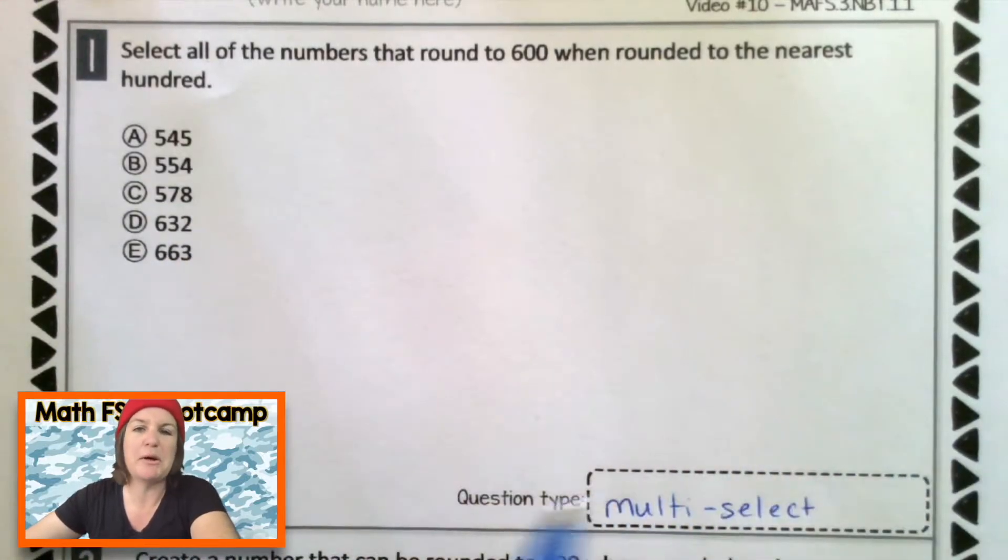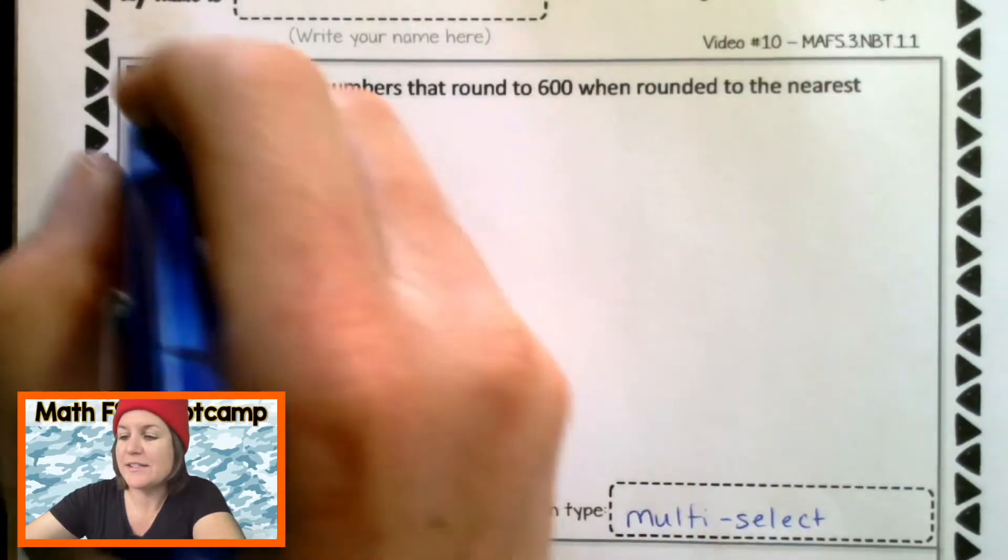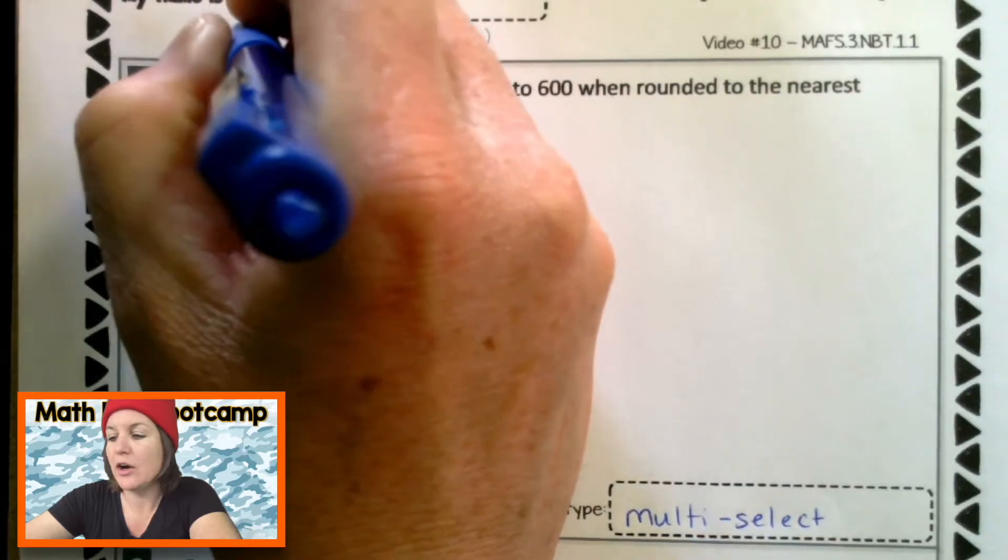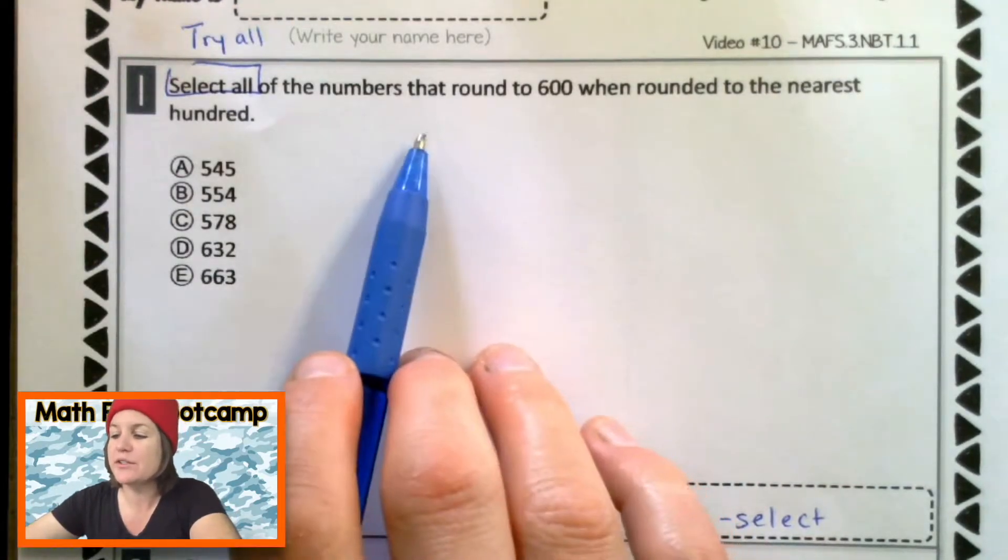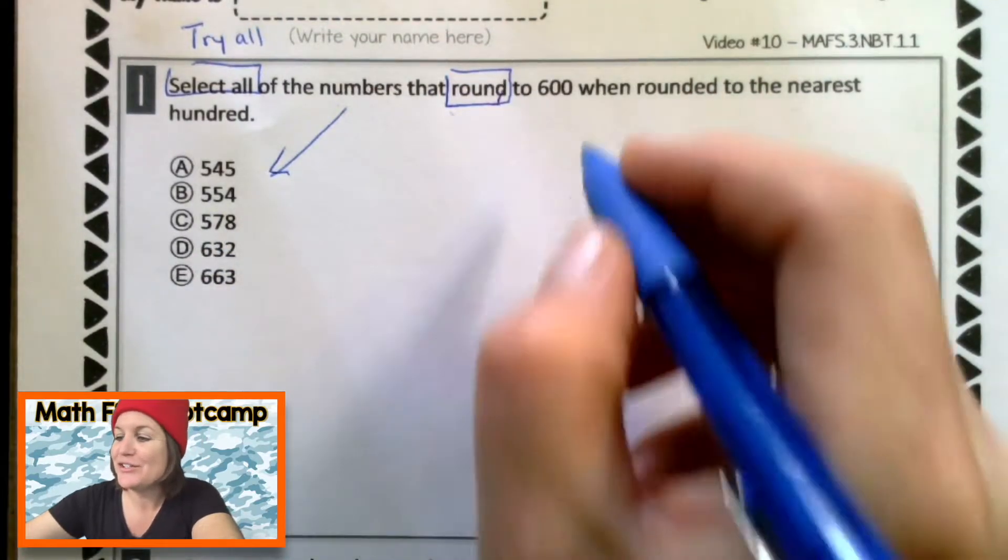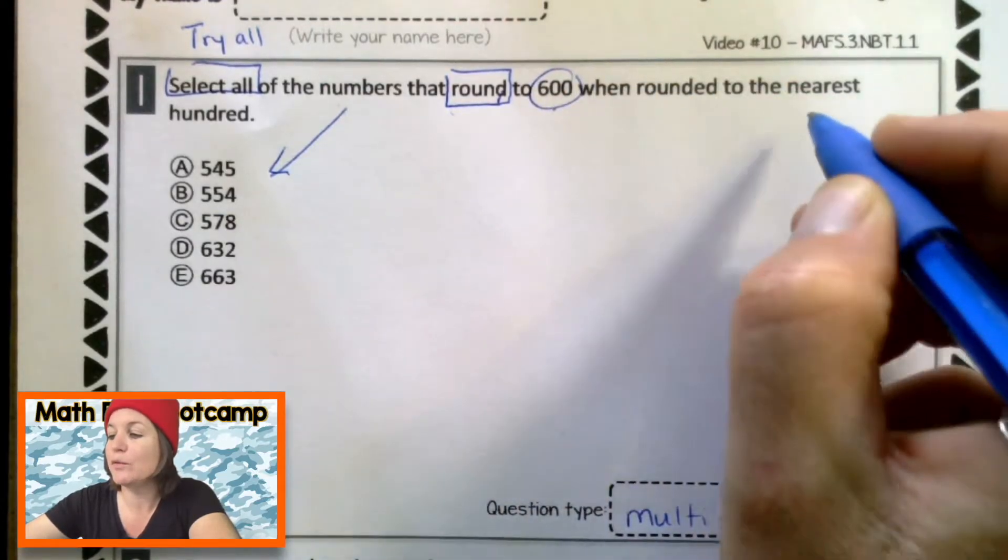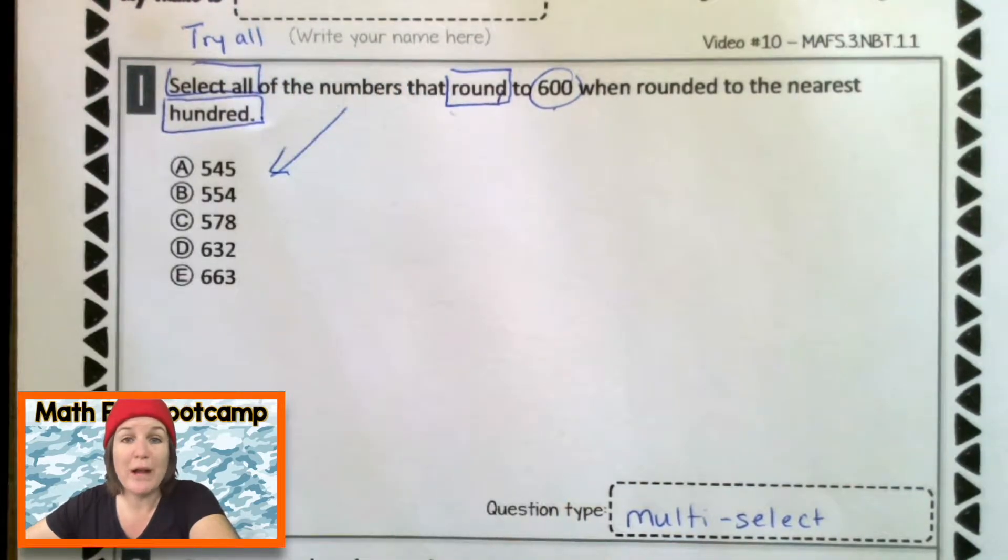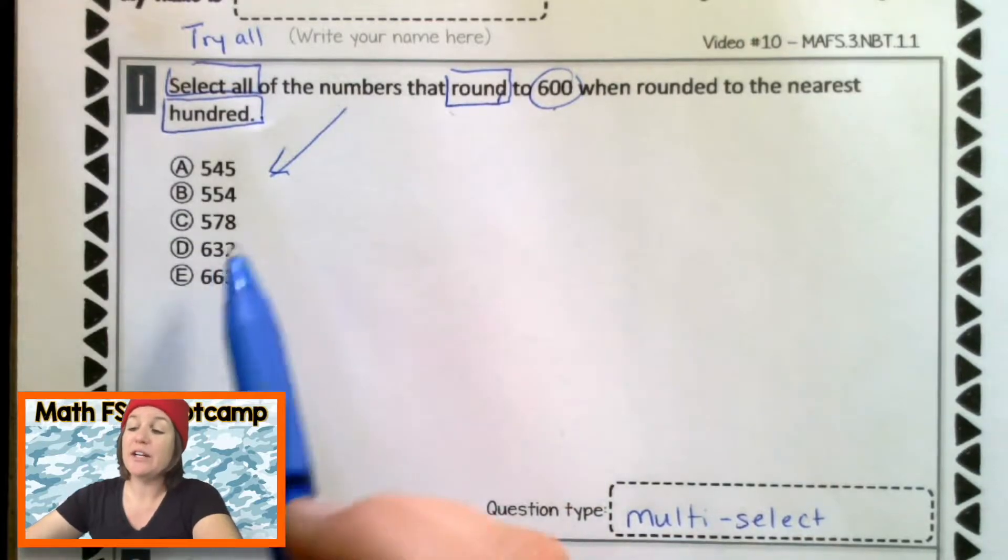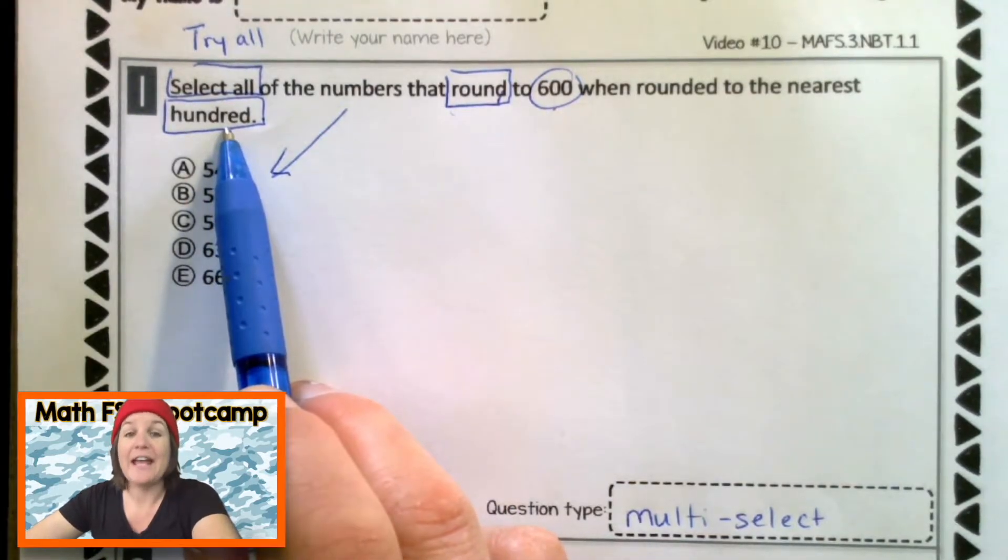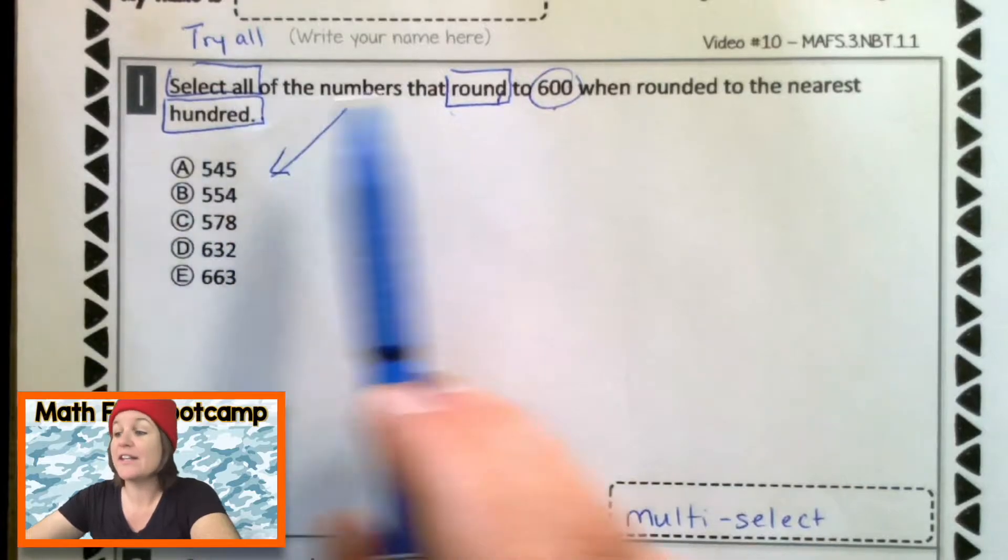Now let's go ahead and read the question and mark it up. It says select all. That means I'm going to try all or work out all of the numbers, which are down here, that round. I love rounding! To 600 when rounded to the nearest hundred. This is important. Okay, so in third grade, you should be able to round numbers to the nearest ten and to the nearest hundred. So what we need to do here is try out all of these. We need to round all of these to the nearest hundred and see if that answer will give us 600.